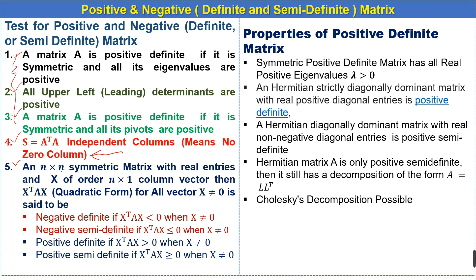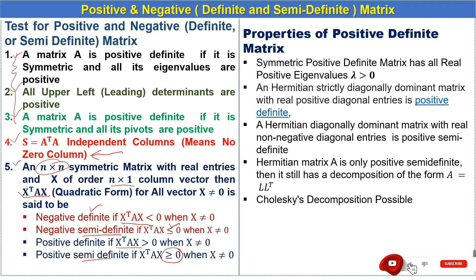The fifth test: an n×n square symmetric matrix with real entries, and x an n×1 column vector. Then the quadratic form x^T A x is said to be: negative definite if less than zero, negative semi-definite if less than or equal to zero, positive definite if greater than zero, and positive semi-definite if greater than or equal to zero, for all non-zero column vectors x.